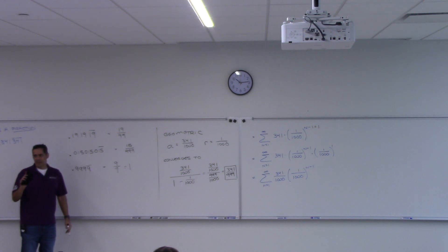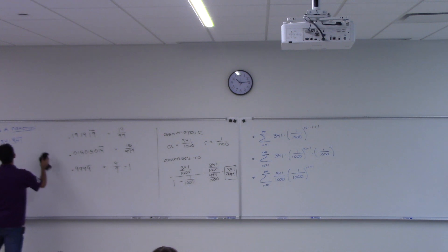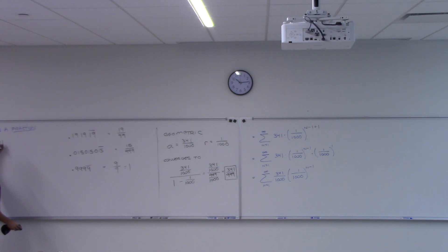Now, on a test, be real careful because if I change this problem, the one we just did, if I change it to 1, 3, 4, 1, 3, 4, 1, 3, 4, 1, do you see the difference between that problem and the problem we just did? There's a 1 right here. I could change that to any number I want. Let me change it to a 5. See that? That's not going to be 341 over 999 anymore.